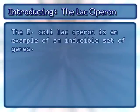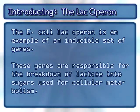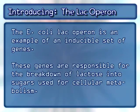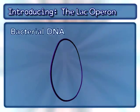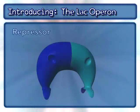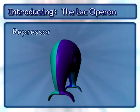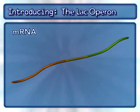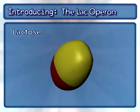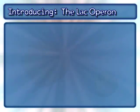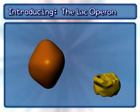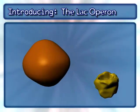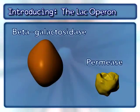The E. coli lac operon is an example of an inducible set of genes. These genes are responsible for the breakdown of lactose into sugars used for cellular metabolism. This inducible system also involves bacterial DNA, a repressor, mRNA, and the sugar molecule lactose. This animation will only focus on two of the three proteins encoded by the lac operon: beta-galactosidase and permease.